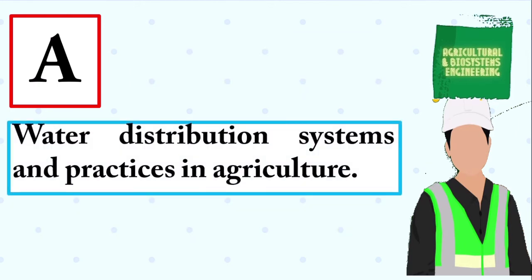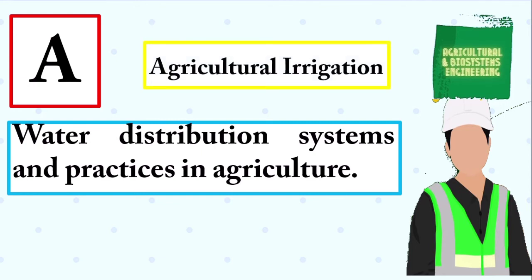Water distribution systems and practices in agriculture. The answer is: agricultural irrigation.